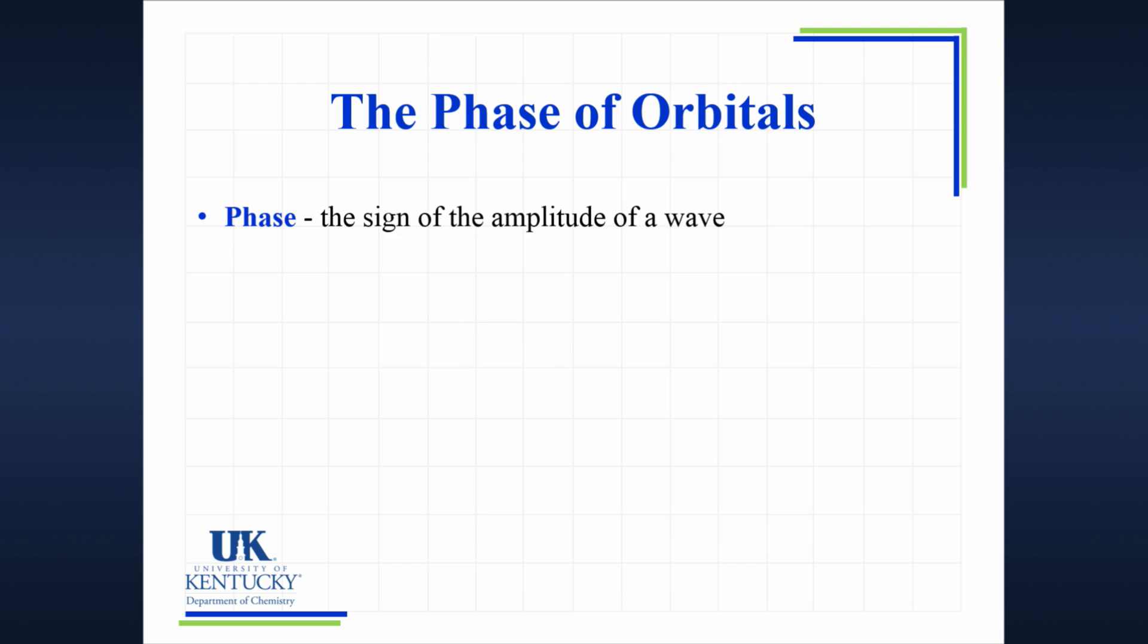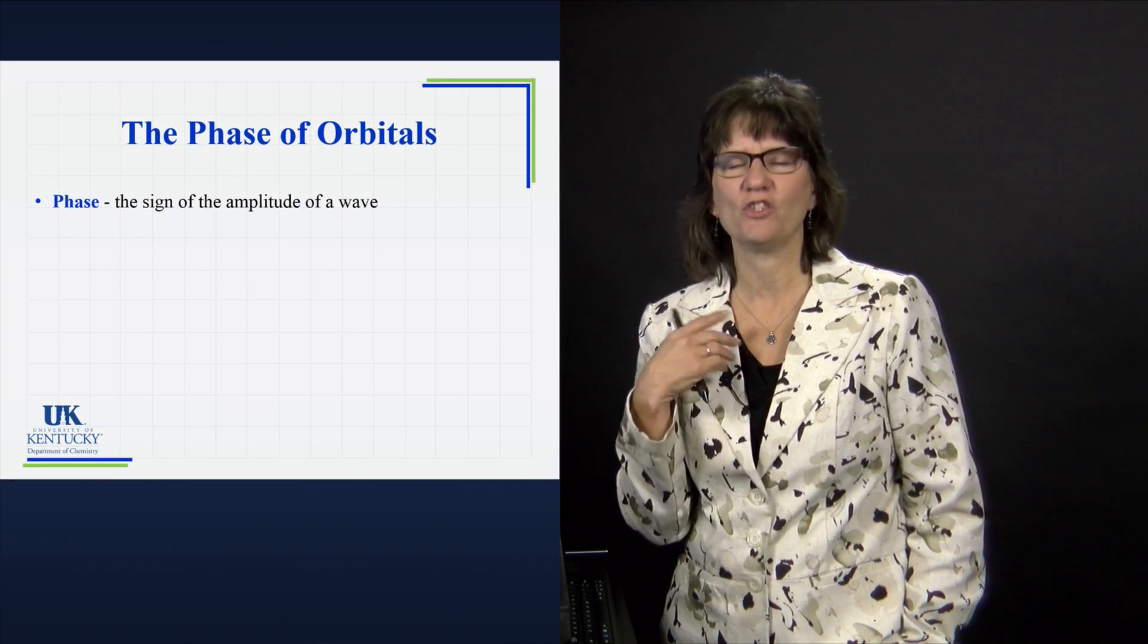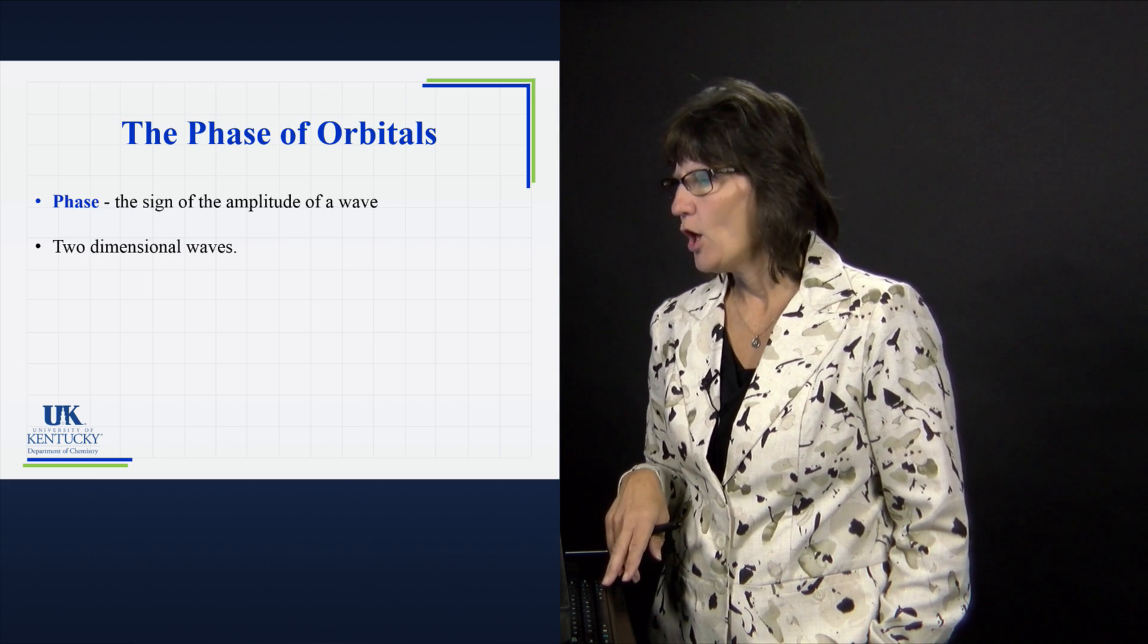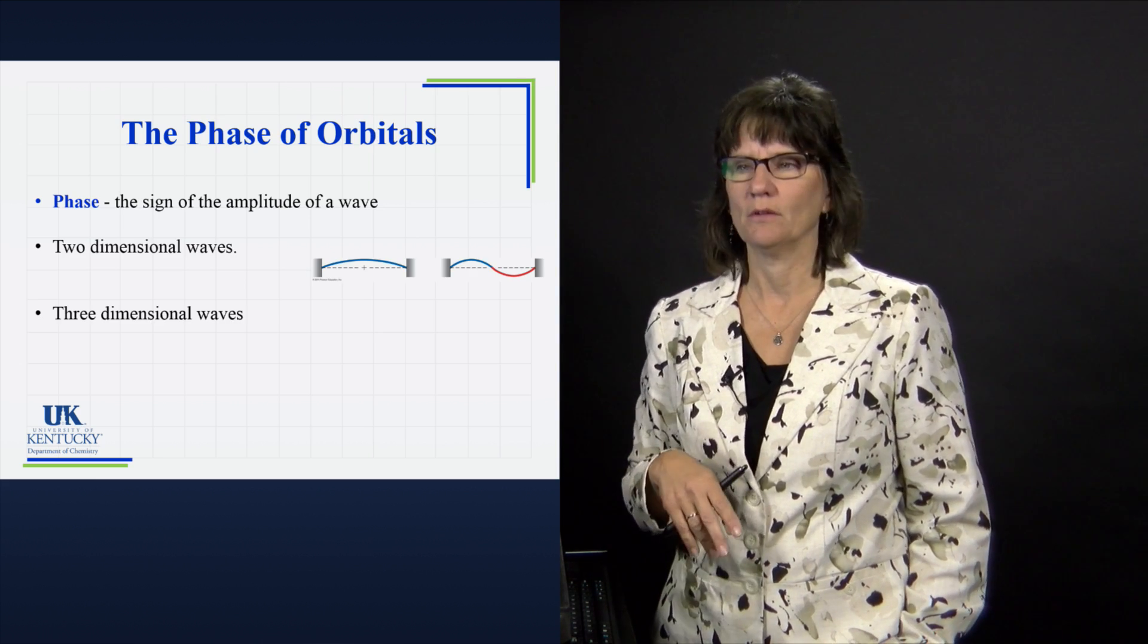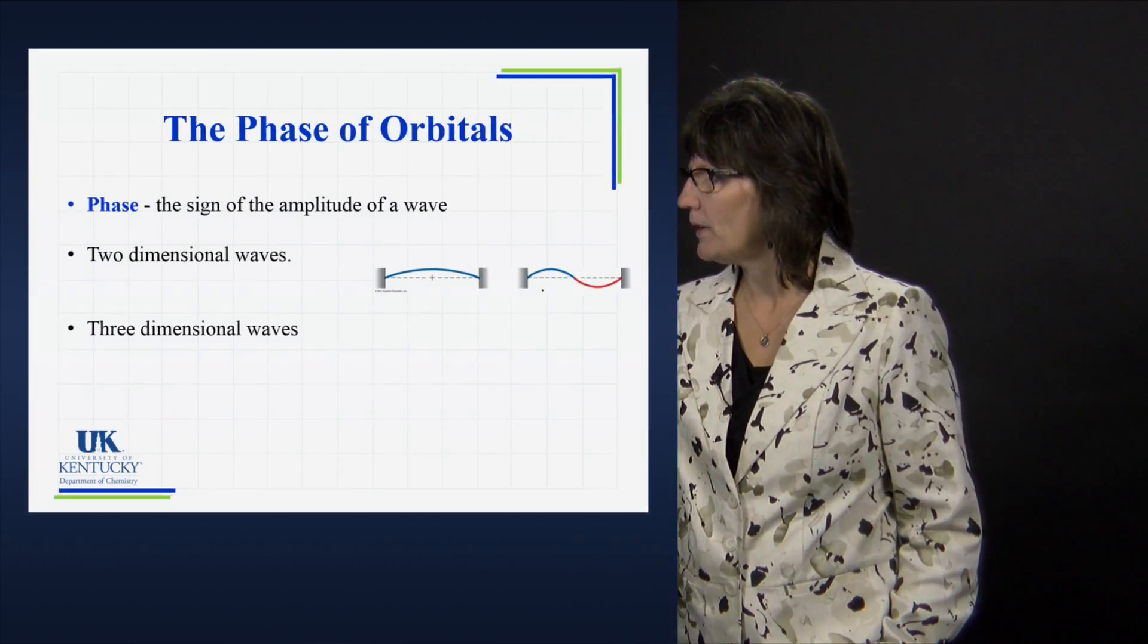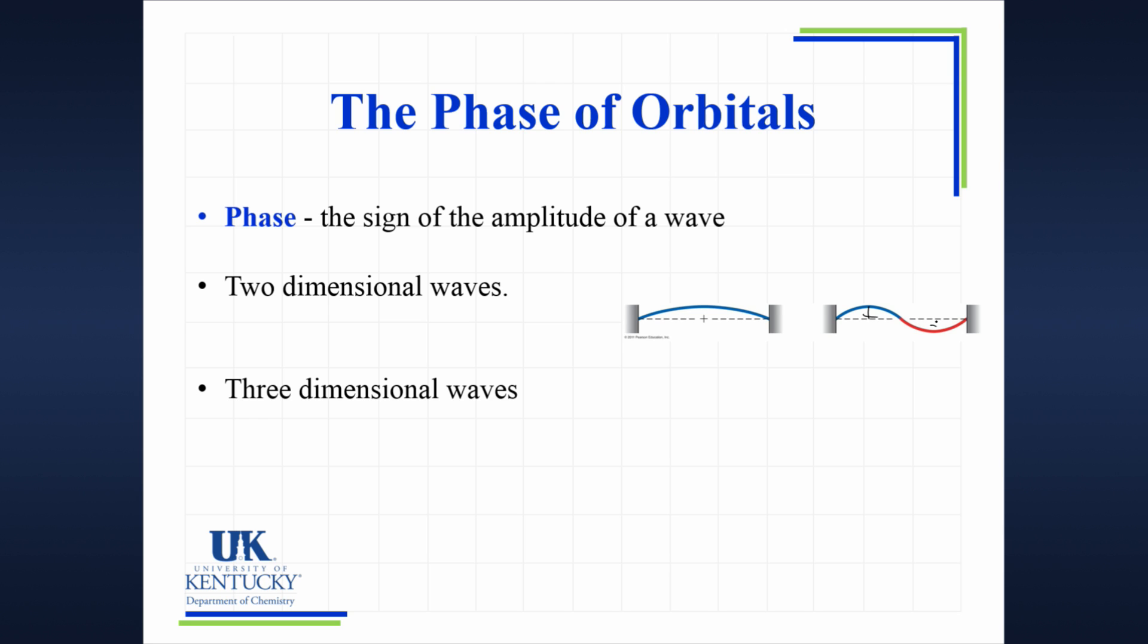Last little thing I want to talk about is the phase of the orbitals. The phase is the sign of the amplitude of the wave. Now, let's think about this in terms of a wave that you'd be familiar with, a wave that's just a wave on the ocean. When you have a two-dimensional wave, and let me get a picture of it, we can have the up and we can have the down. That would give us a positive and a negative area for that wave. Now, when we're a three-dimensional wave, we're going to have also a positive and a negative. I just mentioned this. We won't have to use it very much, but you're going to see in the images two different colors for our lobes. The ones in class, I think, are yellow and red. And this one here, it's blue and it's red. And it is just showing us that same kind of idea of a positive amplitude and a negative amplitude associated with that wave nature of our orbitals.